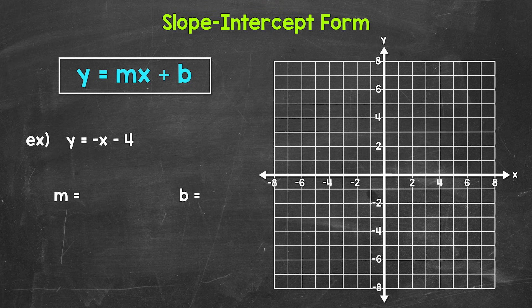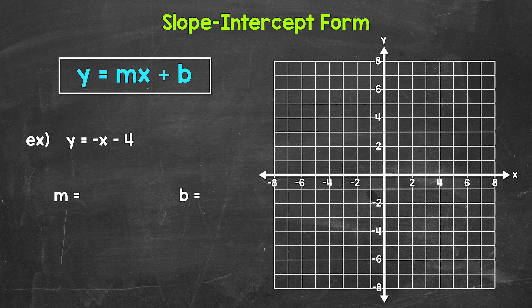We'll start with the slope. This is where it's common for people to get held up, because we just have a negative x — we don't see any number in front of it. When we just see an x with no number written in front, there's an implied one in front of that x. In other words, it's understood that there's just one of that x. And in this case, we have a negative x, so this is actually negative one x.